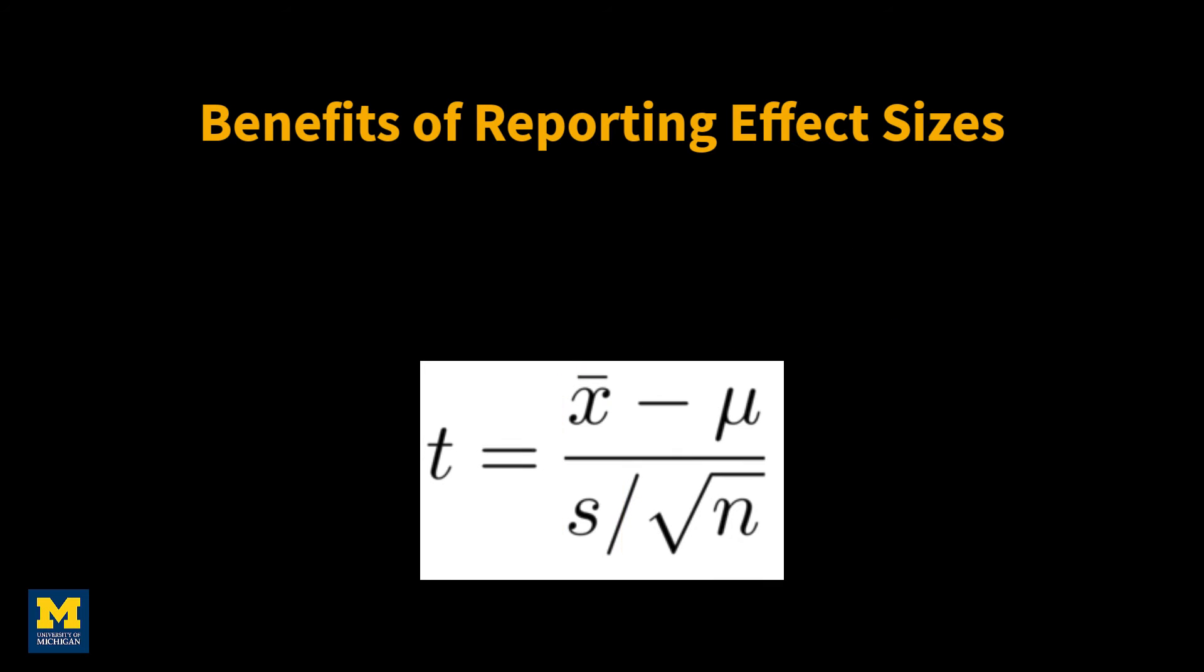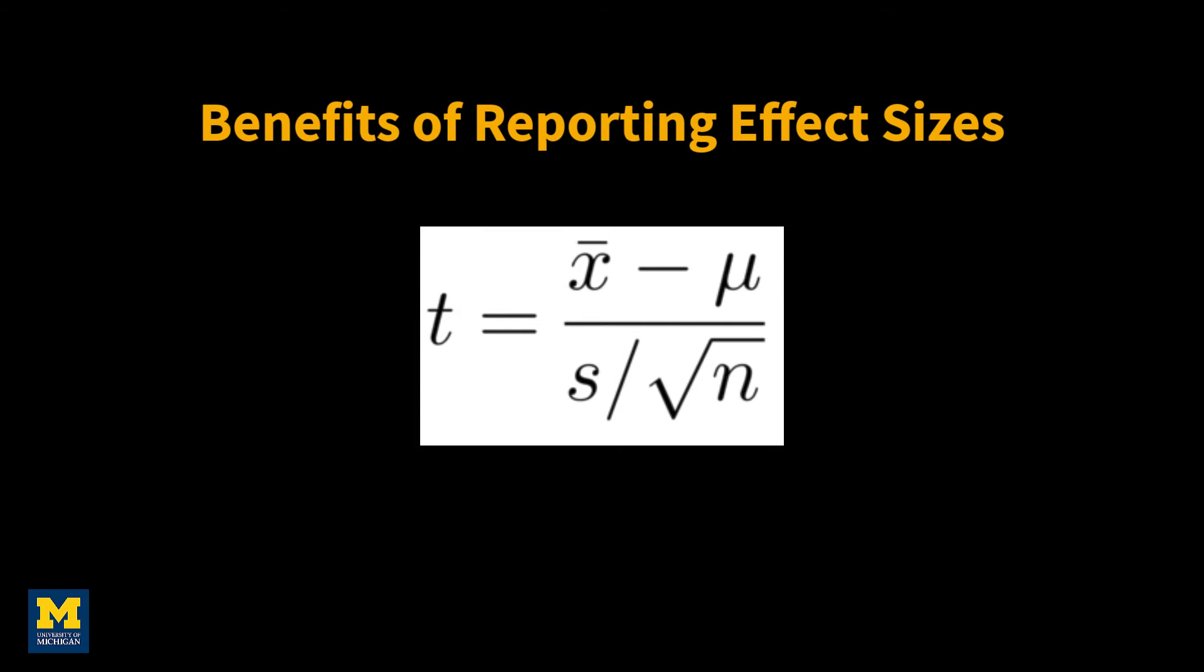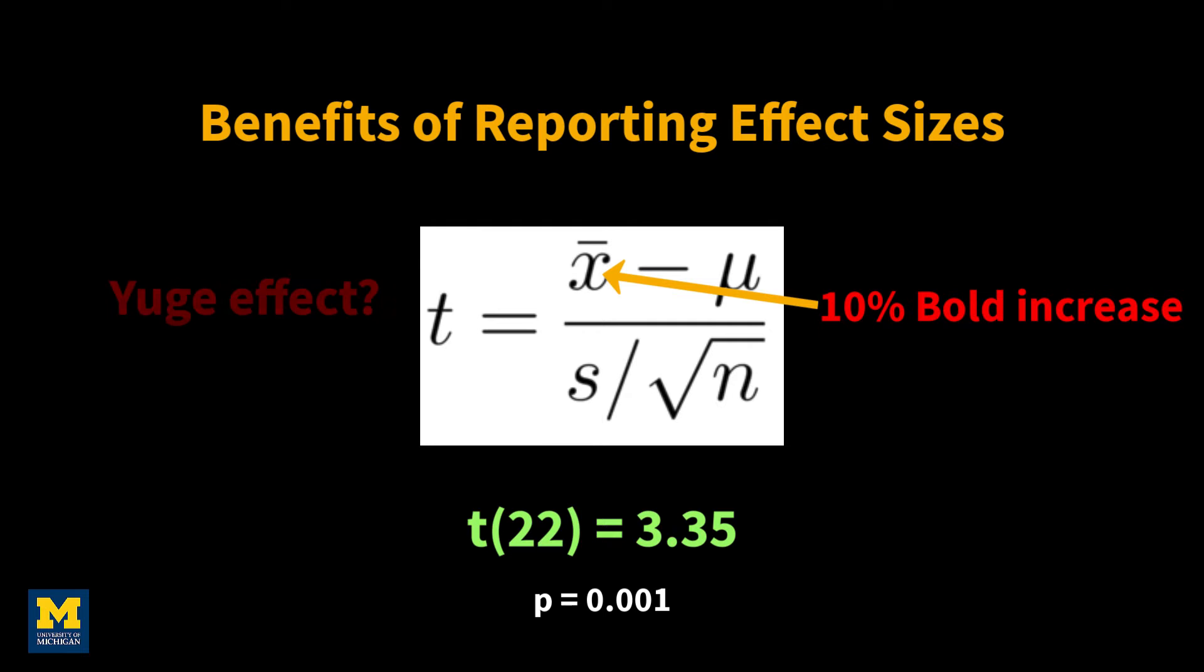In an example from the Chen paper, imagine that a t-statistic of 3.35 is reported with 22 degrees of freedom, roughly corresponding to a p-value of 0.001. This might seem like a reasonable t-statistic, and it is. However, if the magnitude of the BOLD effect is around 10%, this is clearly different from what most experiments would expect and is either an unbelievably large effect or an artifact.